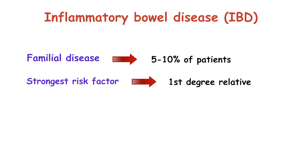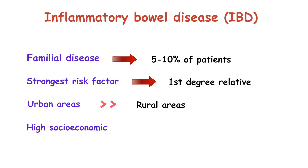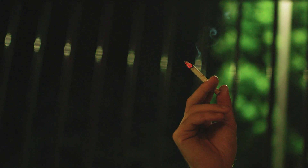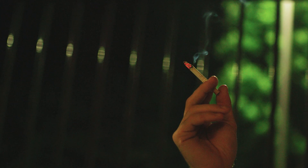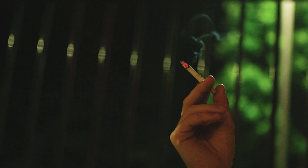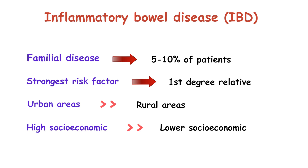Urban areas have a higher prevalence of IBD than rural areas, and high socioeconomic classes have a higher prevalence than lower socioeconomic classes. Smoking is an important risk factor in IBD with opposite effects on ulcerative colitis and Crohn's disease. Smoking increases the risk of Crohn's disease while it has a protective effect on patients with ulcerative colitis.